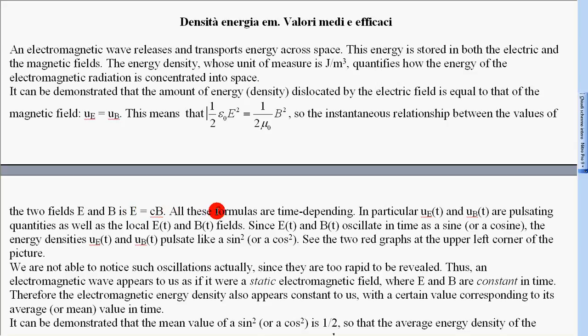All these formulas are time-dependent. In particular, UE(t) and UB(t) are pulsating quantities as well as the local E(t) and B(t) fields. Since E(t) and B(t) oscillate in time as a sine or a cosine...